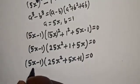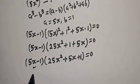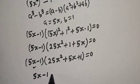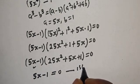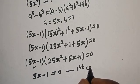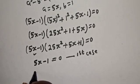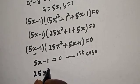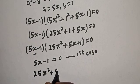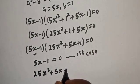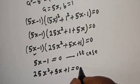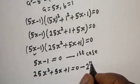From this factored form, we identify two cases. First case: 5s minus 1 is equal to 0. Second case: 25s² plus 5s plus 1 is equal to 0.